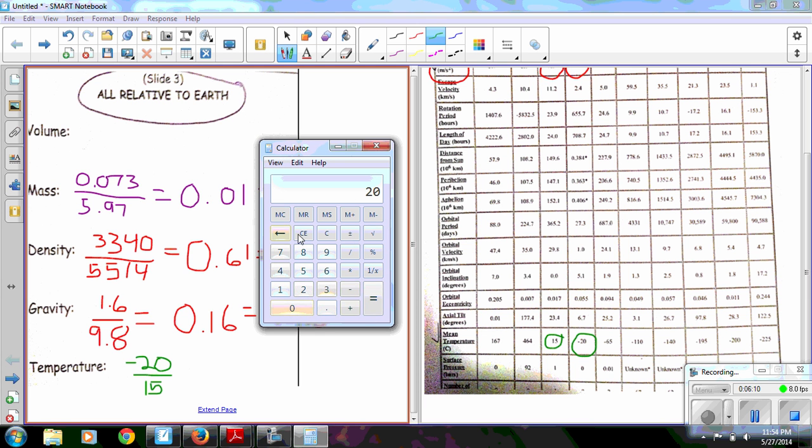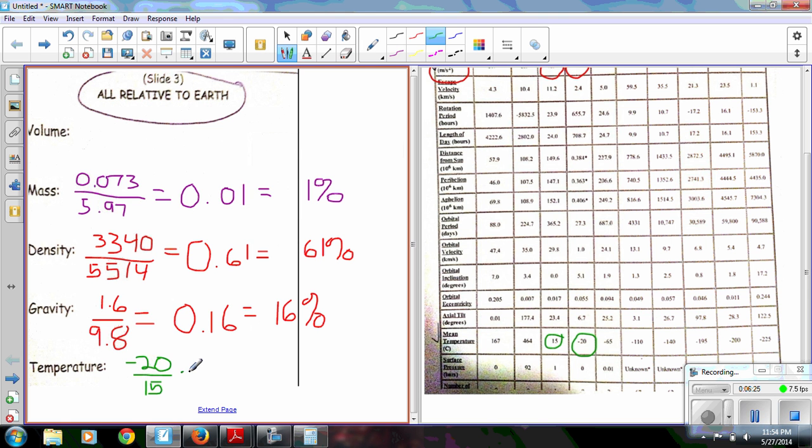Negative 20, don't forget your negative. I don't have a fancy calculator on the computer. There we go. Divided by 15, negative 1.3333, which is negative 1.33.